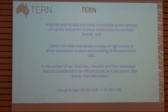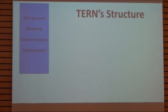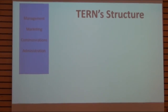Our budget for all of TERN — the five components — is about $6.2 million Australian, which is roughly equivalent to $6.2 million Canadian dollars at current exchange rates. The magnitude is important to keep in mind when you think of the size of the country and what we hope to achieve. It's worth quickly discussing some of TERN's structure because I think that's influential on subsequent discussions.